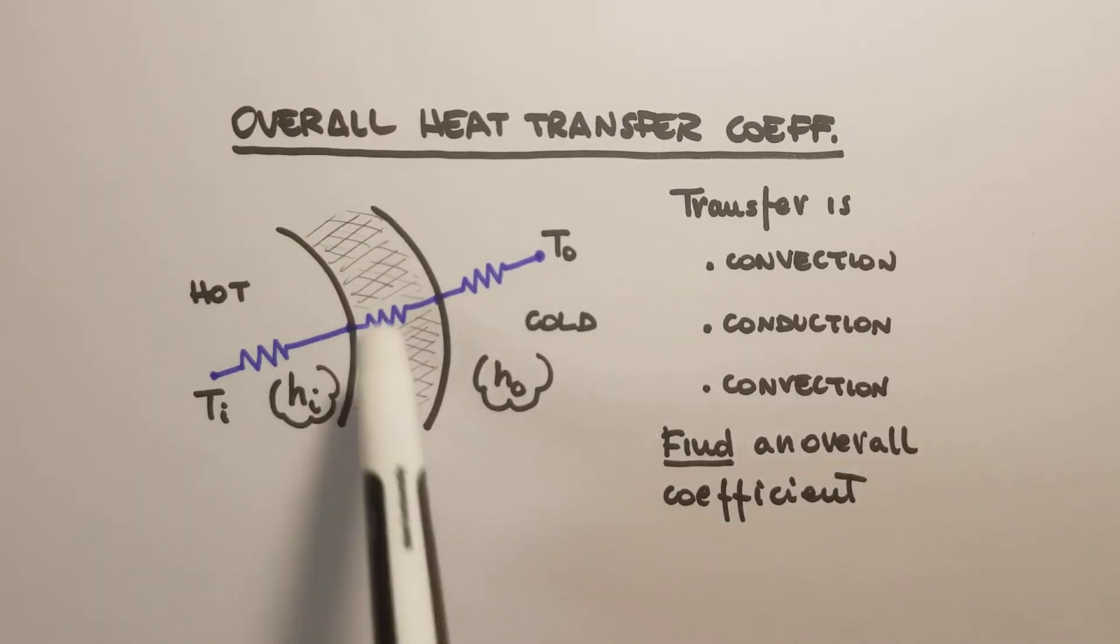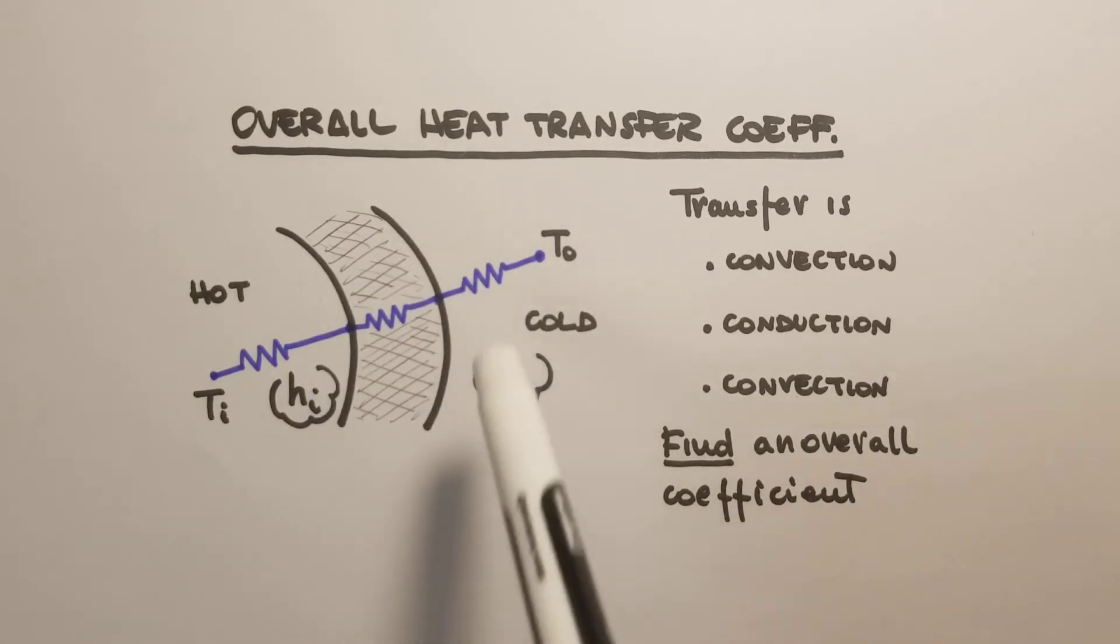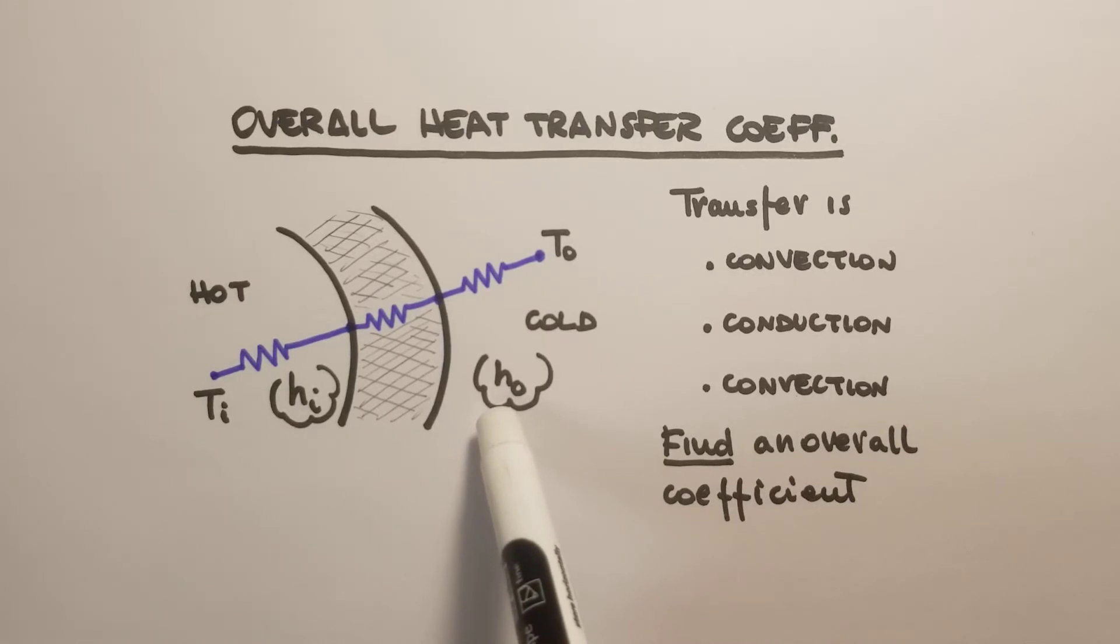So we have a flow of heat from Ti to T0. The heat transfer is by convection inside, then by conduction through the wall, and again by convection. The idea is to find a convection coefficient that characterizes all three mechanisms as one.